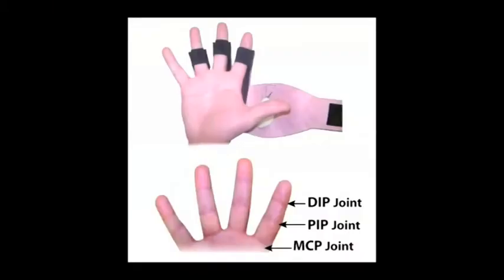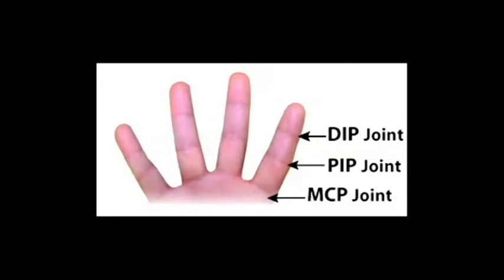It is really important that the elastic slots cover exactly over the PIP joints on each finger respectively. That is the crease between your second and third digit. This will allow freedom of movement at the DIP joint or your top digit so you can still grip the basketball freely. By doing this, the glove design prevents any movement at the MCP joint or the base of the fingers.